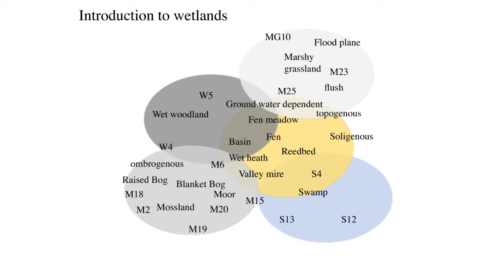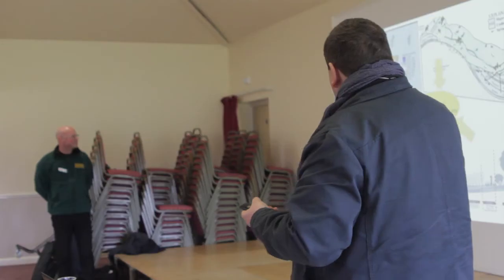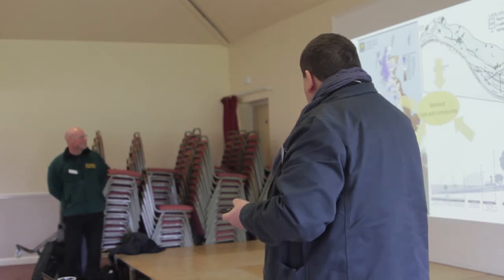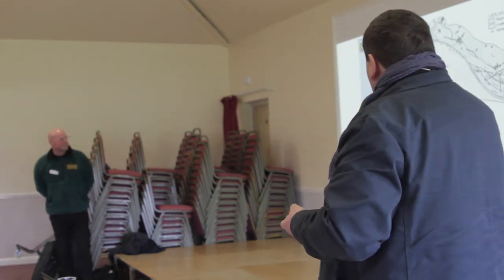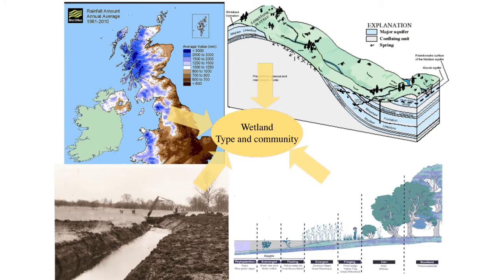Basically that's the M18 raised bog — umbrotrophic, which means rain fed — very deep peats, raised above the level of the landscape around it. These habitats are here because it never stopped raining around here, and that's basically what you need if you're going to get these habitats to develop. Also the local geology, the way that the land was formed after the Ice Age, was just right for these habitats to develop.